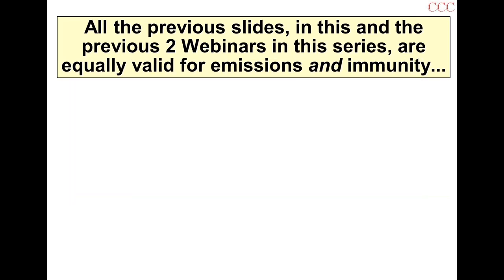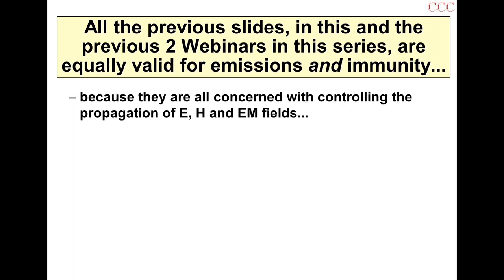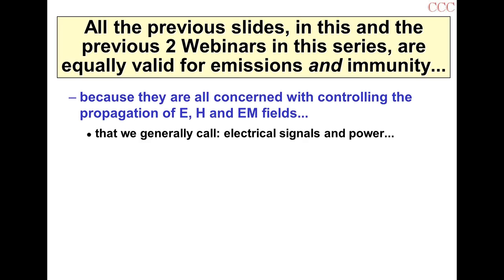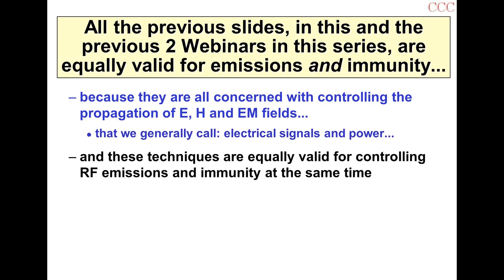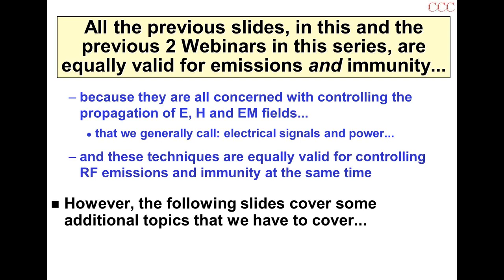The previous slides in this and the other two webinars are equally valid for emissions and immunity, because they're all concerned with controlling the propagation of electric, magnetic, and electromagnetic fields. Electrical signals and power are propagating electromagnetic waves — it's not electrons jostling down a wire. The techniques for controlling field propagation are equally valid whether you're trying to reduce emissions or improve immunity, and in fact they'll improve both at the same time. However, there are some additional topics that concern immunity only: non-linearity.